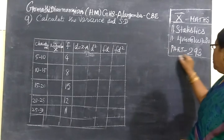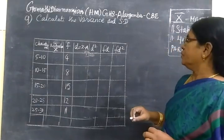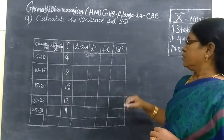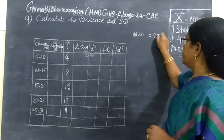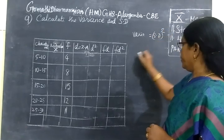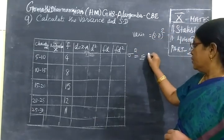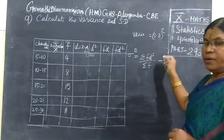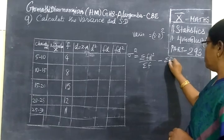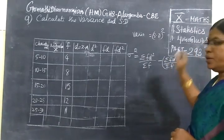Now we see for problem 293, calculate the variance and standard deviation. So here both are asked. Variance equals standard deviation whole square. So variance formula: sigma squared equals sigma FD squared by sigma F minus sigma FD by sigma F whole square.